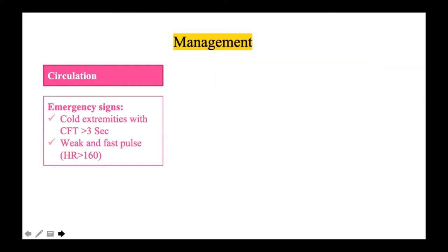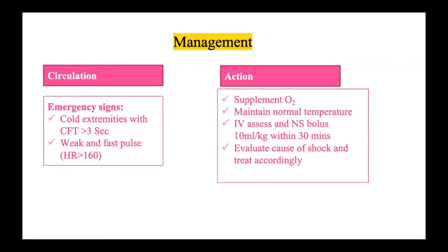Emergency circulation signs include cold extremities with CFT more than 3 seconds, weak and fast pulse, and heart rate above 160 — indicating shock. Management: give supplementary oxygen, maintain normal temperature, immediately establish IV access. For preterm newborns just after delivery, umbilical venous catheter (UVC) can be inserted easily. Beyond that, insert a peripheral IV cannula or intraosseous line and give normal saline bolus at 10 mL/kg over 30 minutes. Subsequently evaluate the cause of shock — cardiogenic, septic, or obstructive (e.g., tension pneumothorax) — and modify treatment accordingly.